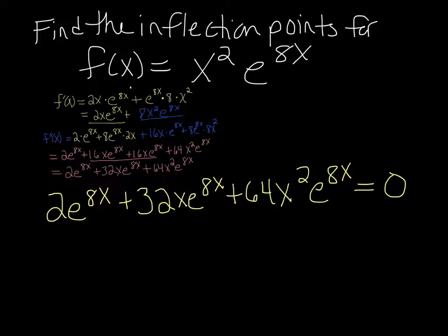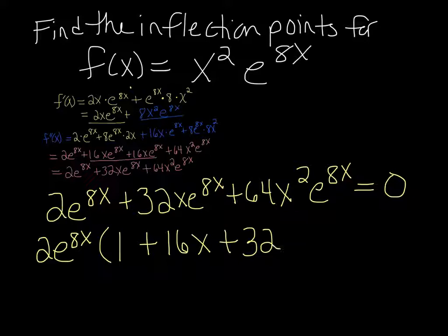Okay, first take out any common factor. You can take out a 2e to the 8x. And you're left with 1, plus 16x, plus 32x squared.